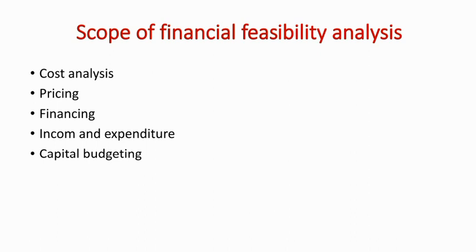We use different types of funds — short-term, long-term, and middle-term. These need to be available from different categories, like financial institutions, banks, commercial banks, and scheduled banks. Then government organizations like NABARD and EXIM Bank. We need to identify the financing sources available for financial feasibility.